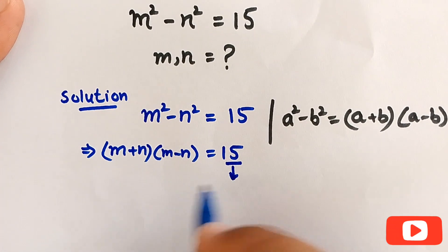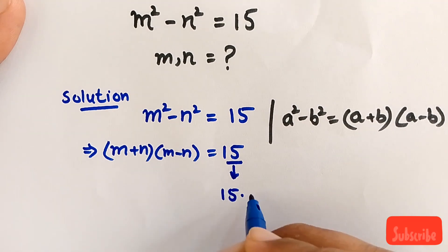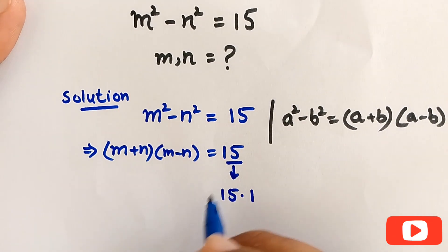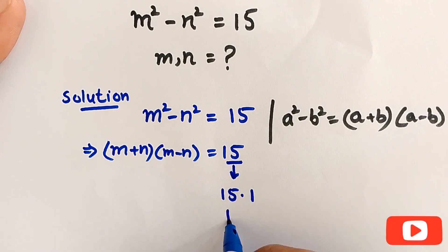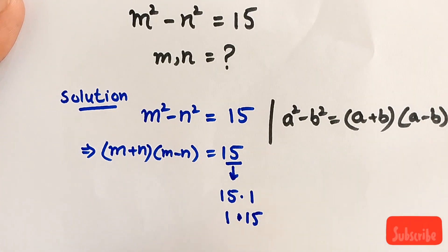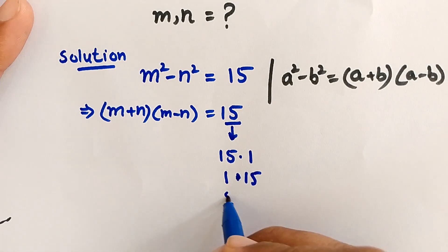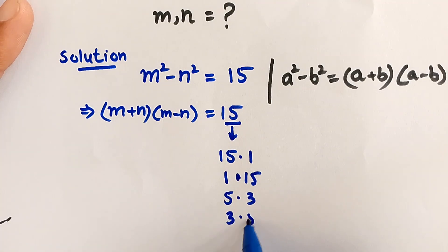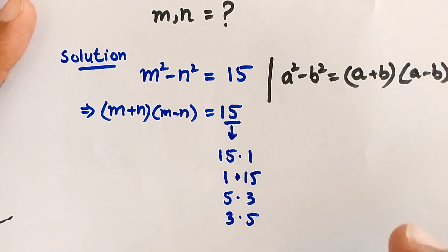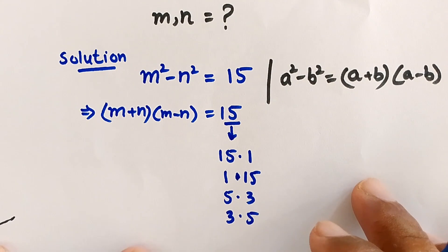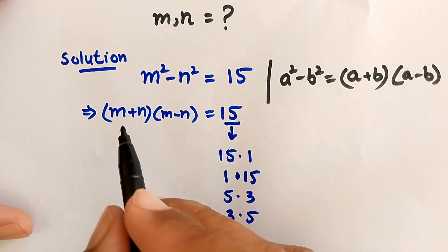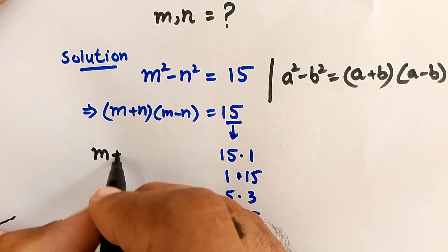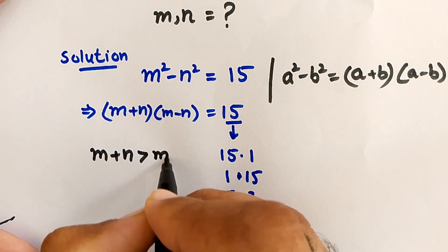Now we have to factorize 15. The factors are: 15 times 1, 5 times 3, and their reverses 1 times 15 and 3 times 5. We also know that m plus n is always greater than m minus n.